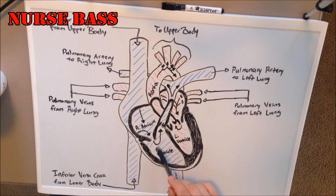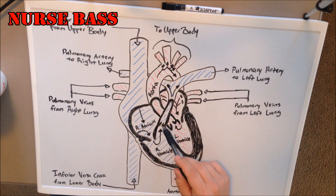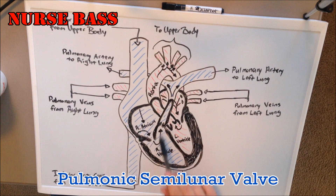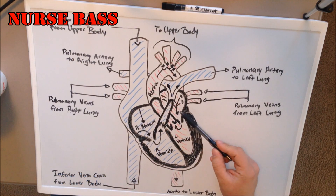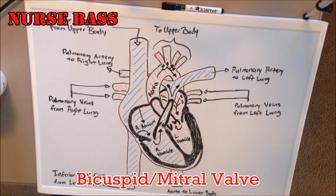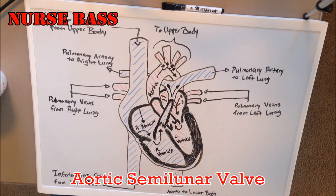These two little flaps you see here — there's actually a third flap that I'm not able to draw — this is your tricuspid valve. Going from the right ventricle up into the pulmonary arteries, you have another valve: this is your pulmonic semilunar valve. As your blood comes into your left atrium and pours into your left ventricle, it passes through the bicuspid valve, also known as the mitral valve.